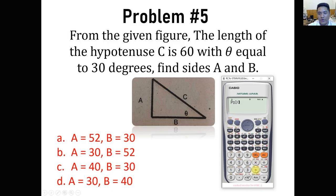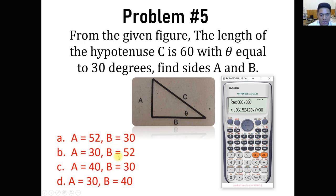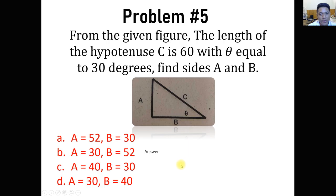If we convert that into rectangular using the Rec function — inputting 60 and 30 — we get X equals approximately 52, which is side B, and Y equals 30, which is side A. So B equals 52 and A equals 30. The answer is letter B.